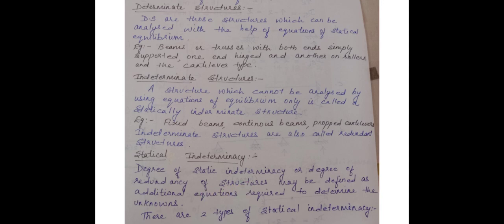There are two types of Statical Indeterminacy: External Static Indeterminacy and Internal Static Indeterminacy. External Static Indeterminacy is related to the support system of the structure, and Internal Static Indeterminacy is related to the members of the structure. Some examples for finding Static Indeterminacy are given. Statical Indeterminacy is found by the equation: DSI = number of unknown reactions minus number of equilibrium equations.